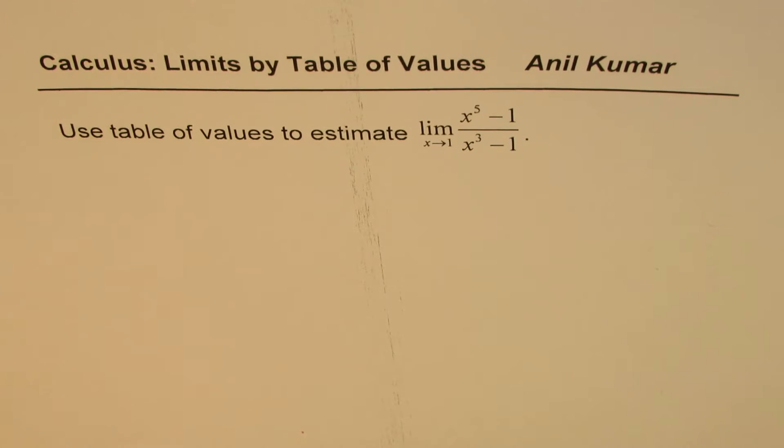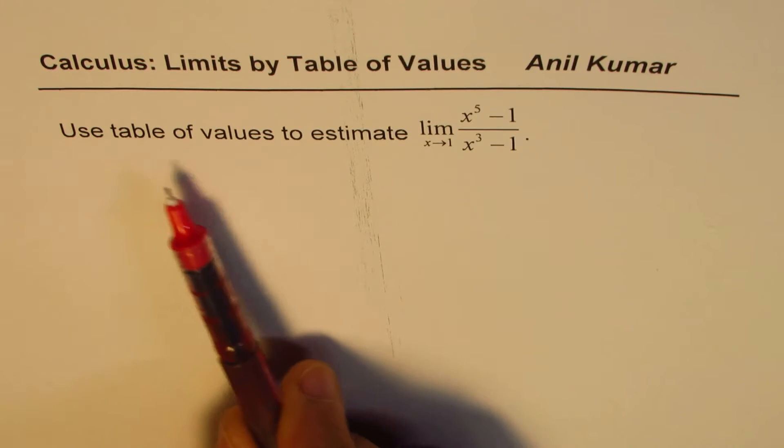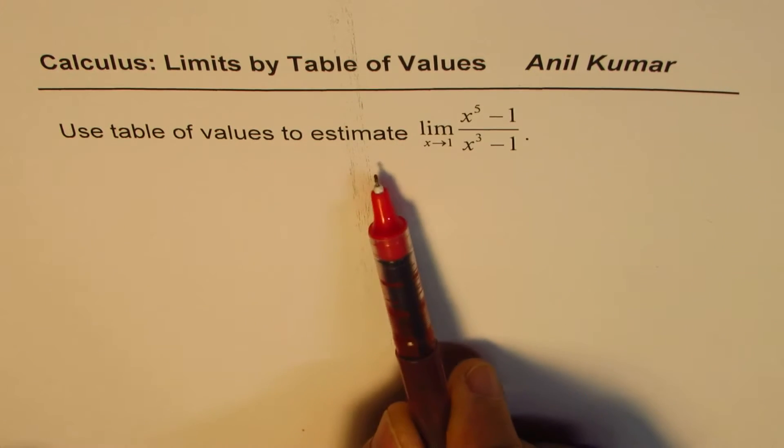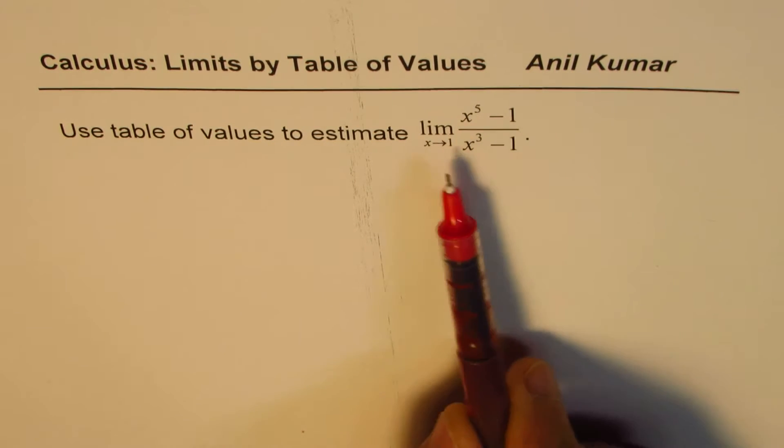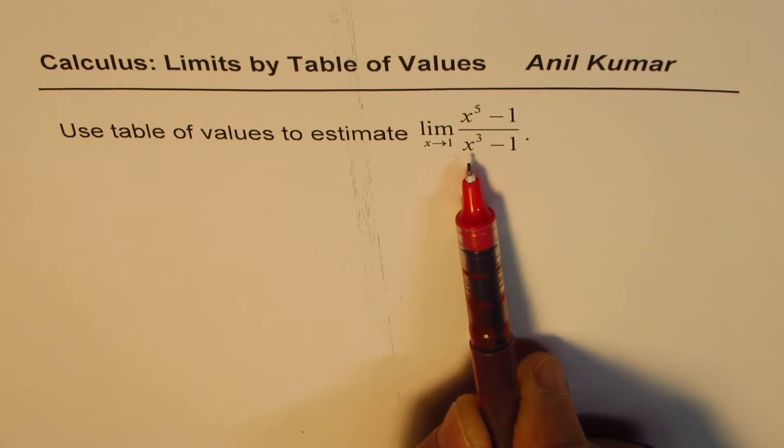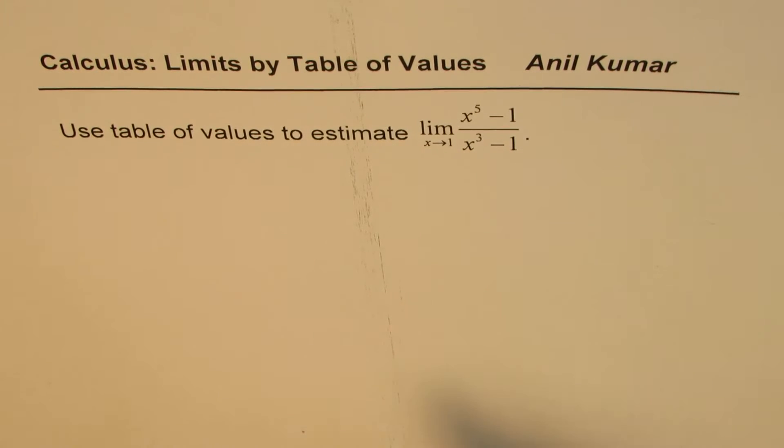I'm Anil Kumar sharing with you a video to explain how to find limits by table of values. The question here is, use table of values to estimate limit as x approaches 1 of x to the power of 5 minus 1 divided by x to the power of 3 minus 1.